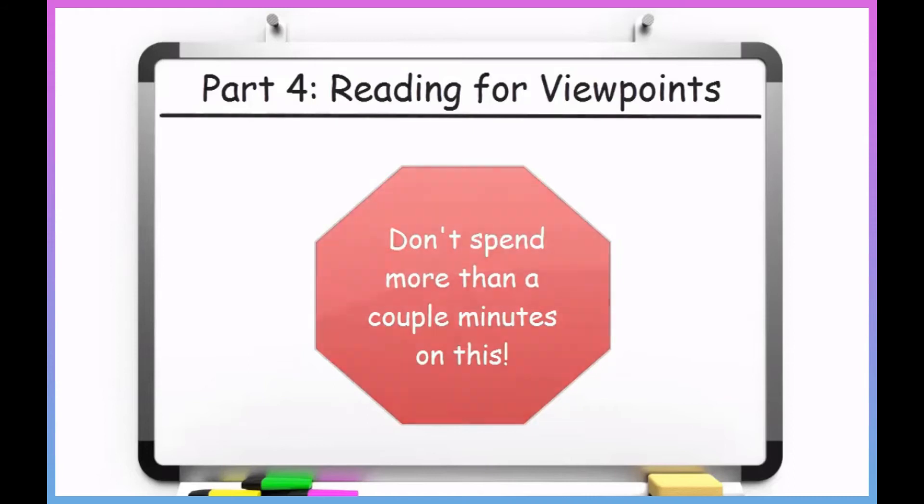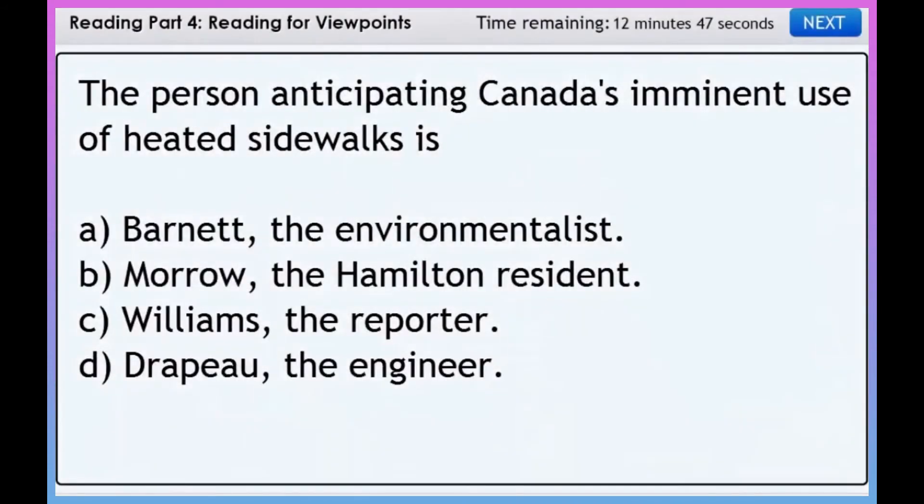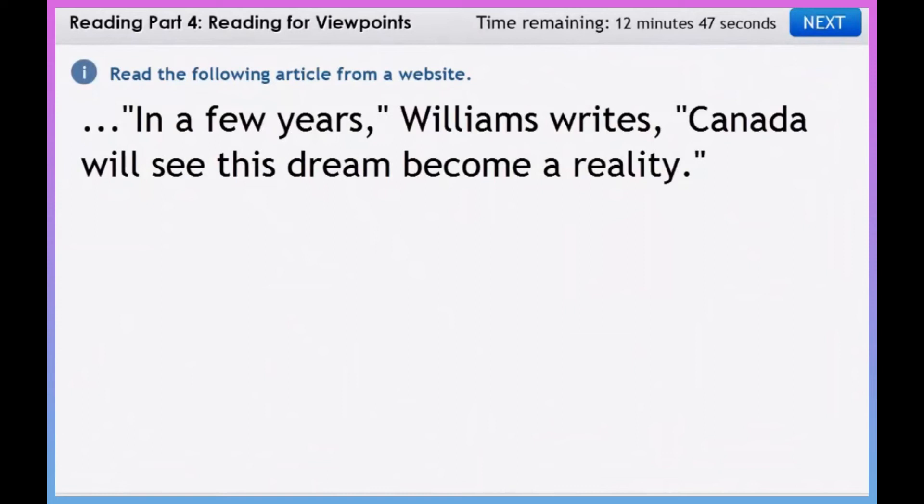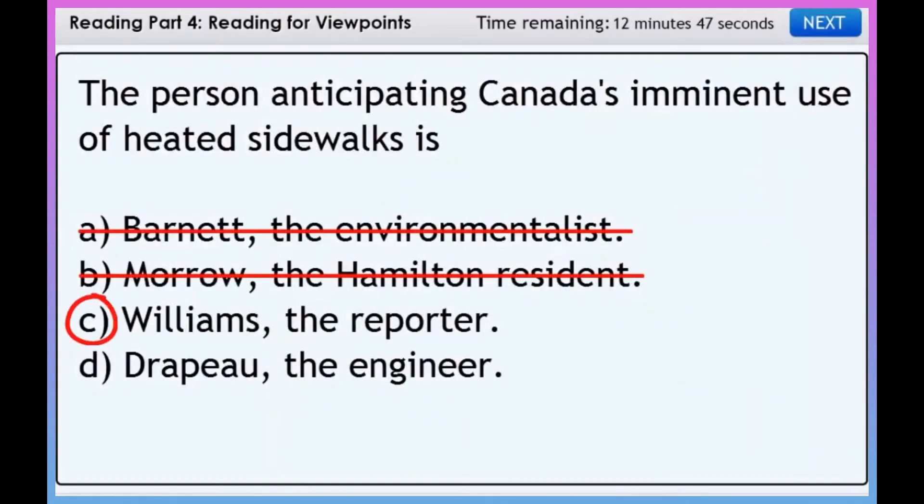And speaking of which, let's try a question from the first section. Okay, so we can cross out Barnett and Morrow, since they're not in favor of the sidewalks. Drapeau does support the use of heated sidewalks. But if you remember the first paragraph, it was actually Williams who predicts that Canadian cities will soon use these sidewalks. He mentions this in his statement, in a few years, Canada will see this dream become a reality. So C is the correct answer.